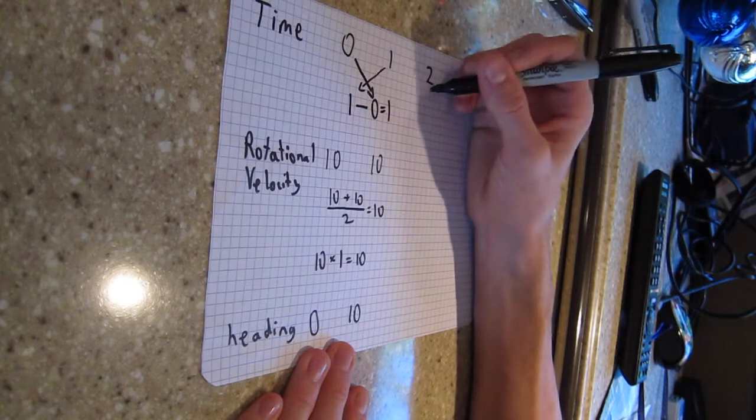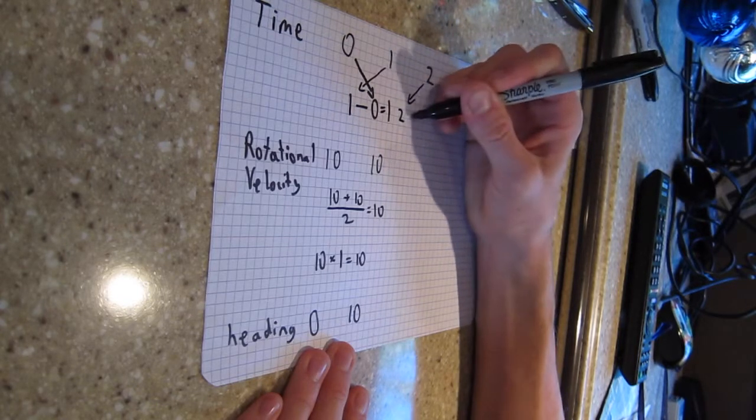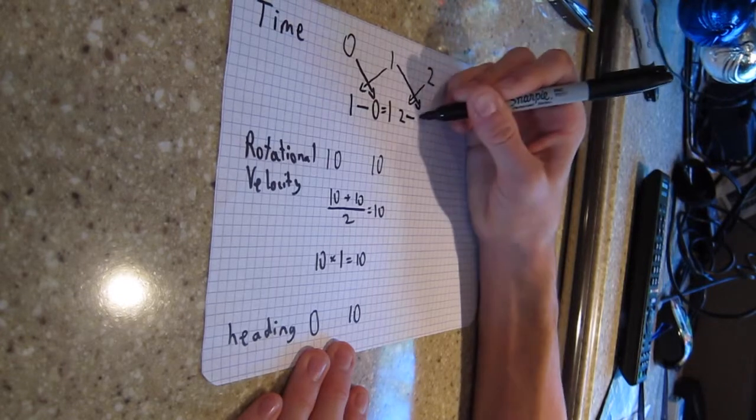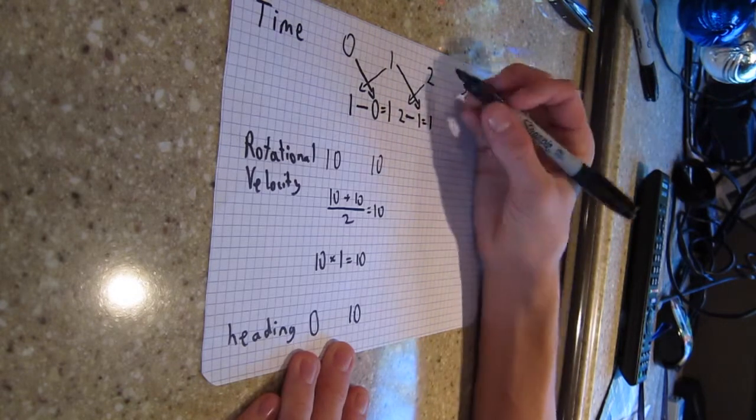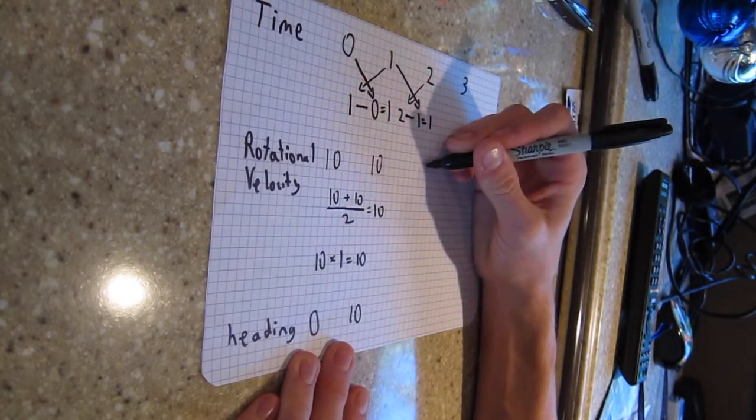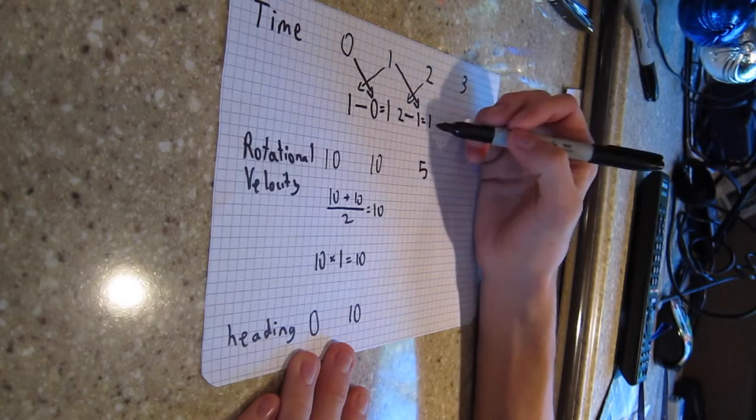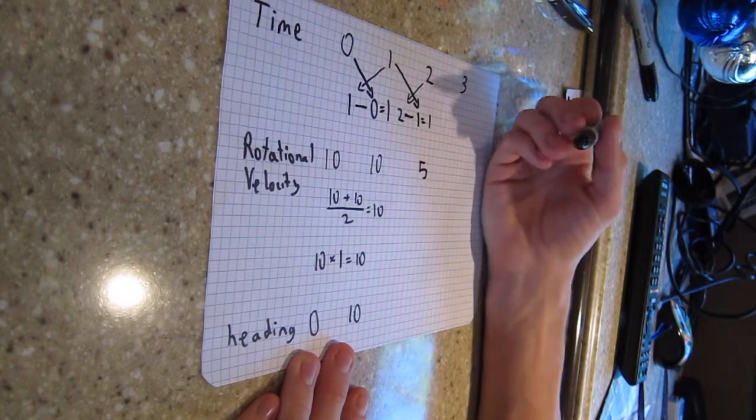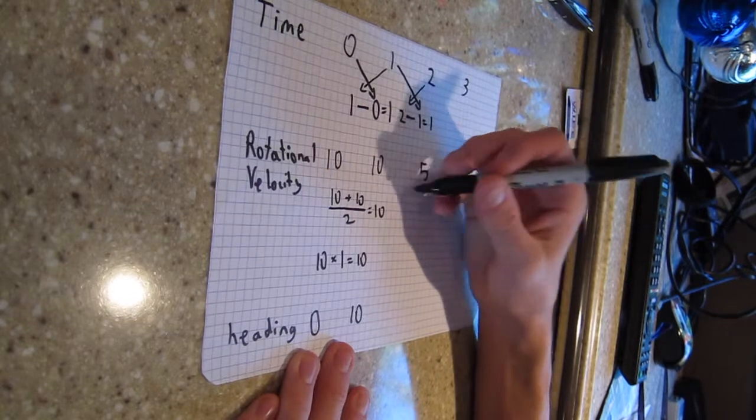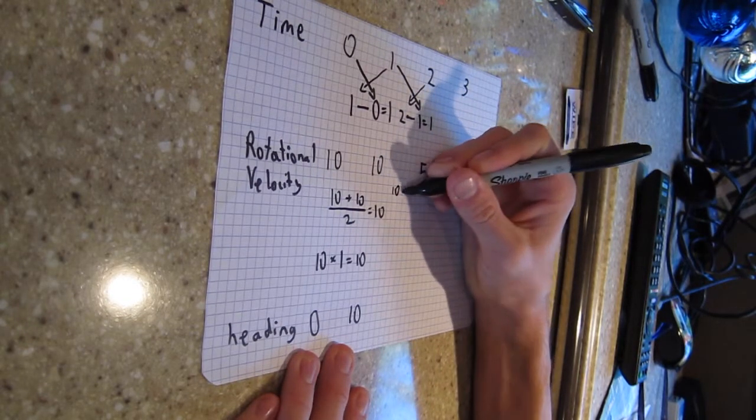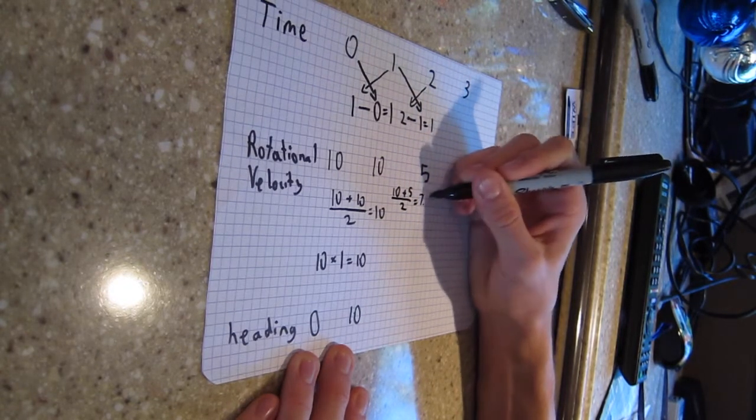So we'll start off again taking our ending time, so 2, minus our beginning time, which is 1. And we get 1 second again. And then let's say at 2 seconds we read a velocity of 5 this time. So now we've got our 1 second interval. We started the interval moving at 10, rotating at 10 degrees per second. Ended it rotating at 5 degrees per second. So we'll take the average of the 2. 10 plus 5 over 2, which is equal to 7.5.